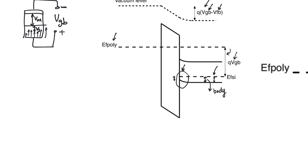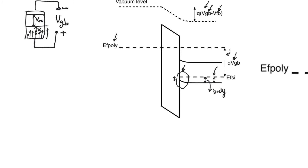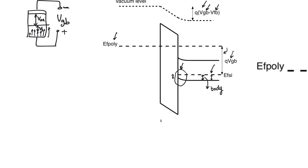What we see at the surface is a higher concentration of holes. We call this mode of the MOS capacitor the accumulation mode, because we are accumulating the majority charge carriers that exist in the body near the surface. The body naturally contains holes — there is a level of holes in equilibrium and deep in the bulk. When we see more holes near the surface than deep in the bulk, we call this accumulation mode.